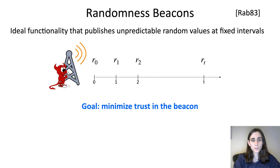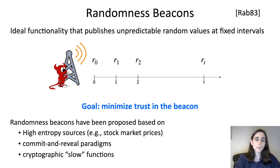Various constructions of randomness beacons have been proposed. For example, you can use stock market prices as high-entropy sources, but inherently this relies on an external source of data. You can also use commit and reveal paradigms, but this relies on interaction. Therefore, in this work, we focus on what we view as the most natural and weakest of the assumptions, which is using slow functions to get a randomness beacon.